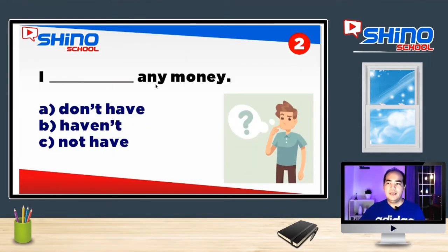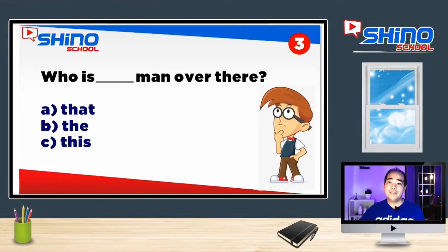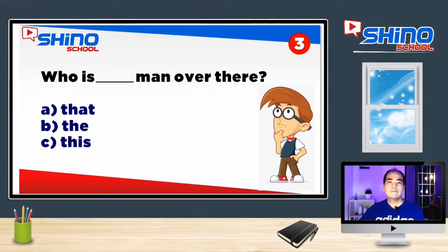Número 2: I ___ any money. Letra A: don't have. Letra B: haven't. Letra C: not have. Resposta correta, letra A: don't have. Pergunta de número 3: Who is ___ man over there? Letra A: that. Letra B: the. Letra C: this. Resposta correta, letra A: that.